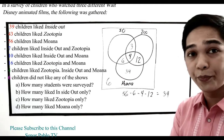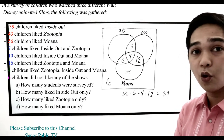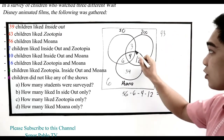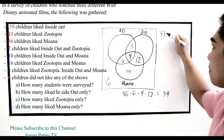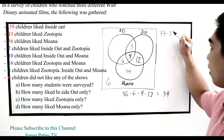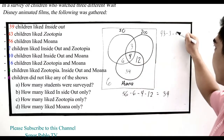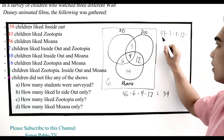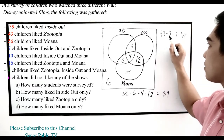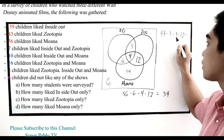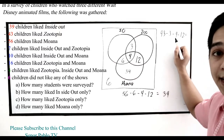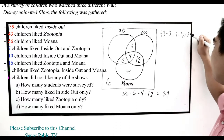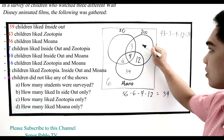Next, 43 like Zootopia. We subtract the intersections: minus 3, minus 4, minus 12. So 43 minus 3 is 40, minus 4 is 36, minus 12 is 24. We place 24 in the Zootopia-only region.